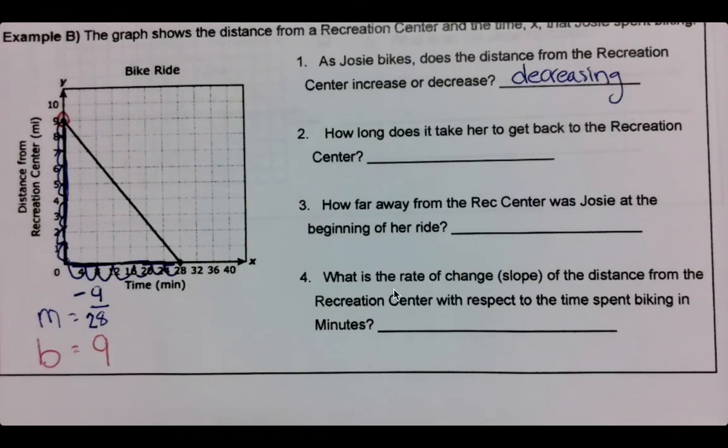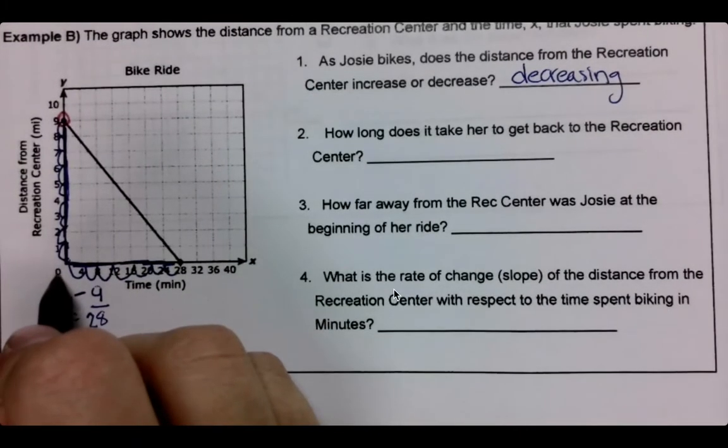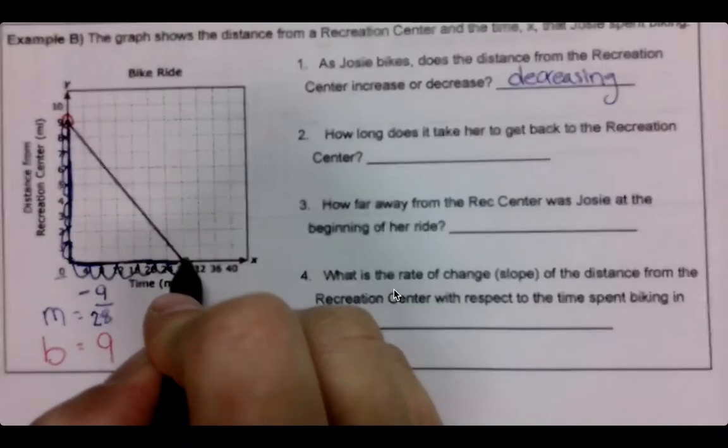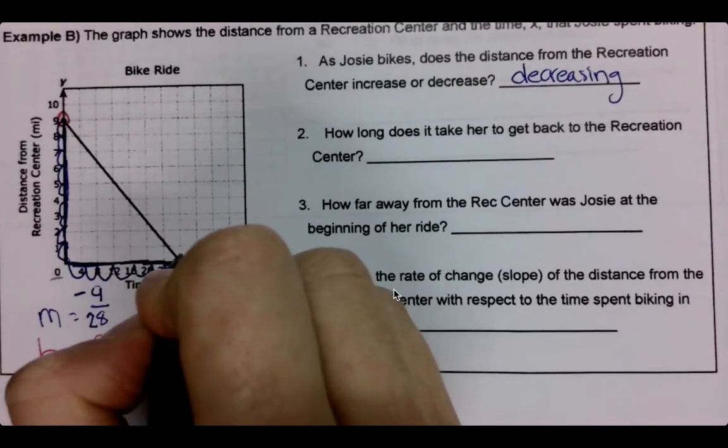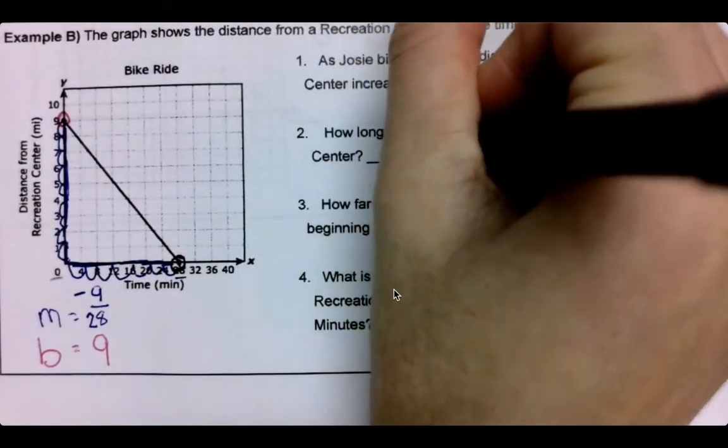Then it says, how long does it take her to get to the recreation center? So what does that mean? That means that my distance would be zero, right? So I'm finding where my distance is zero. That would be this point right here, which is at 28 minutes.